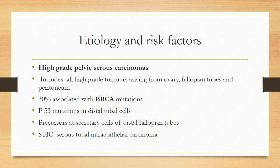Etiology and risk factors: high-grade pelvic serous carcinomas include all high-grade tumors arising from the ovary, fallopian tube, and peritoneum. These cancers are very aggressive and when they present they involve the ovary, fallopian tube, and peritoneum — the whole abdomen. It is difficult to distinguish the site of origin, and it doesn't matter because whatever the origin, they have the same prognosis, treatment, and behavior. 30% of these high-grade pelvic serous cancers are associated with BRCA mutations — breast ovarian cancer syndrome mutations.